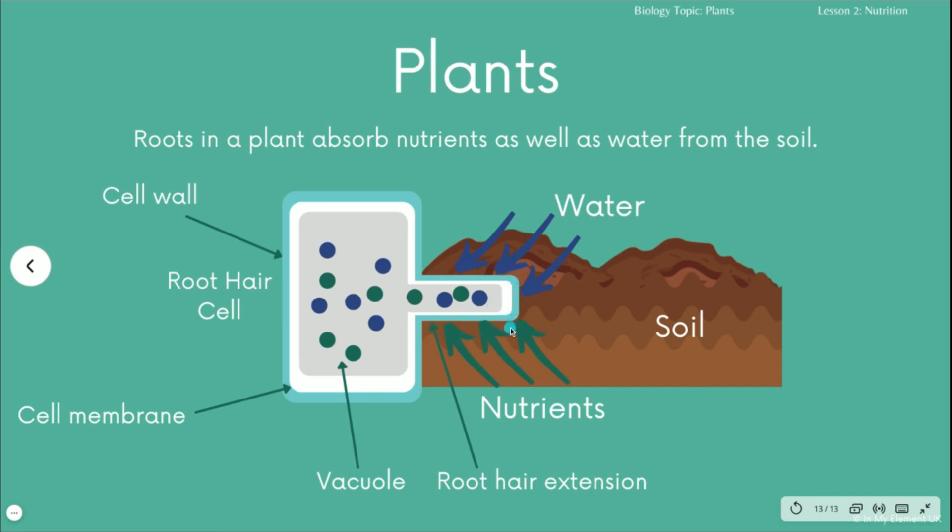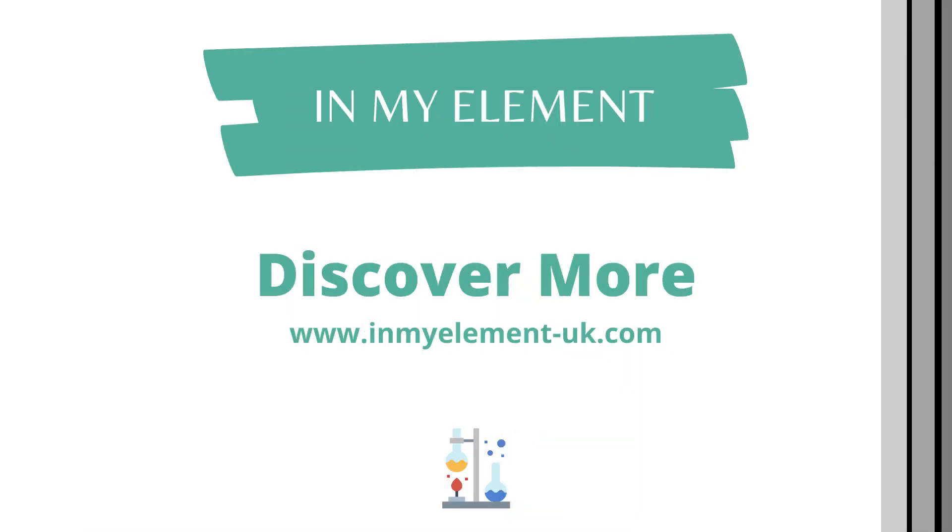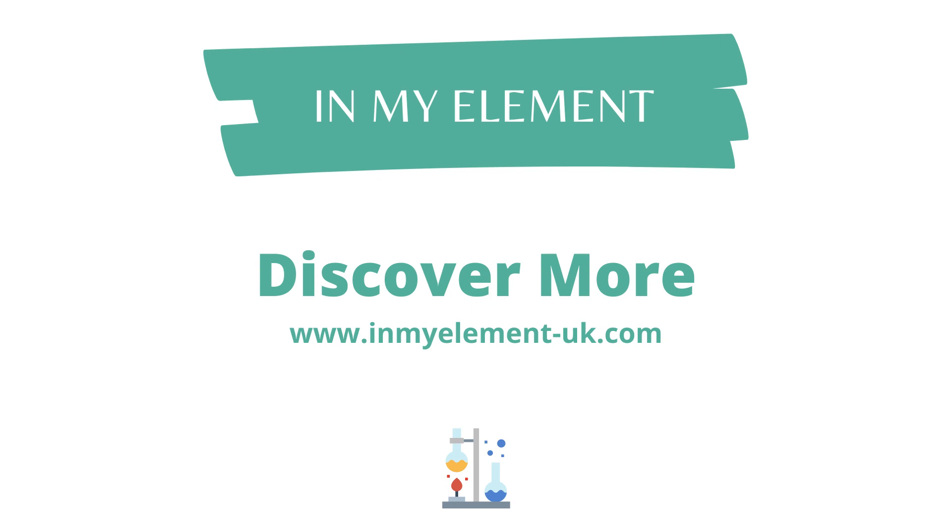This increases the surface area of the root hair cell to make sure the plant can absorb as much water and nutrients from the soil to take in to the cell, and then to be transported through phloem and xylem up through into the plant so that photosynthesis can happen.